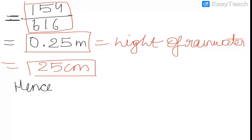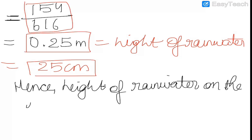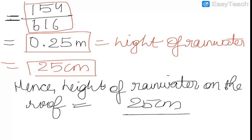Hence, height of rainwater on the roof is equal to 25 centimeter. Thank you, and please subscribe to my channel if you understood this question.